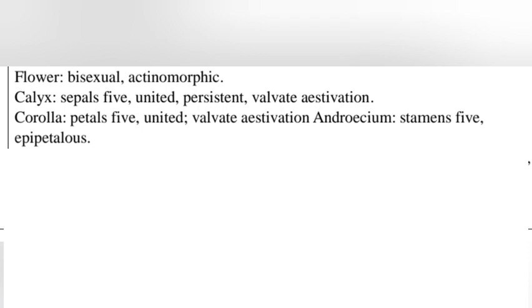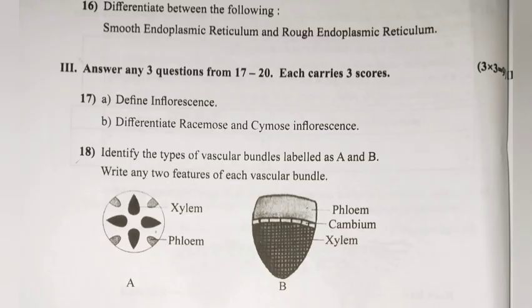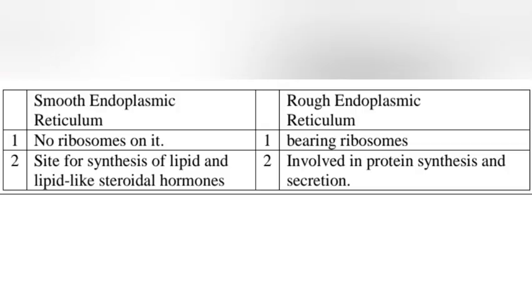Question 16: Difference between smooth endoplasmic reticulum and rough endoplasmic reticulum. Answer — Smooth ER: no ribosomes on it; site for synthesis of lipids and lipid-like steroidal hormones. Rough ER: bears ribosomes; involved in protein synthesis and secretion.